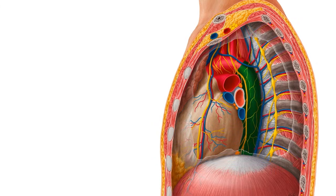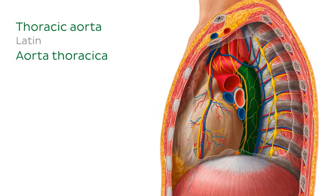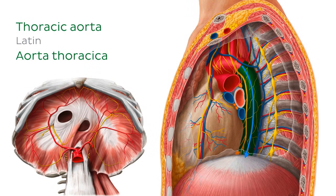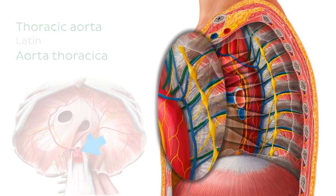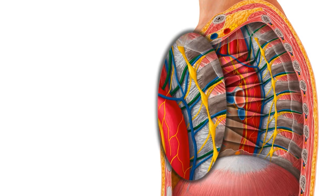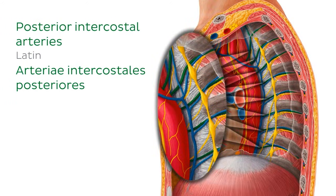So we're going to begin with what is arguably the most important structure of the posterior mediastinum, which is the descending thoracic aorta. Continuing on from the aortic arch, the descending thoracic aorta runs along the left side of the lower thoracic vertebral bodies before passing through the aortic hiatus of the respiratory diaphragm, where it becomes the abdominal aorta. As it descends through the posterior mediastinum, the descending thoracic aorta gives off paired lateral branches, which supply the intercostal spaces between the third through to the twelfth ribs, and these are known as the posterior intercostal arteries.